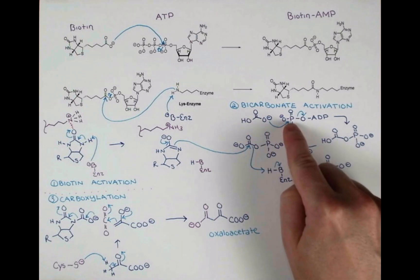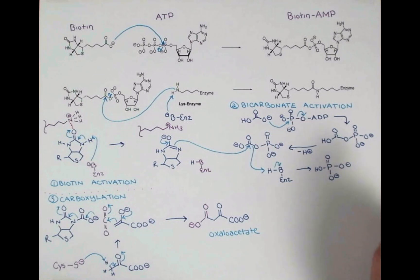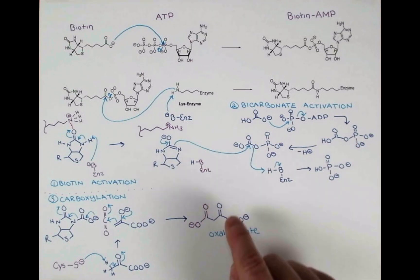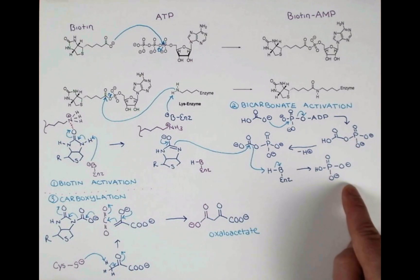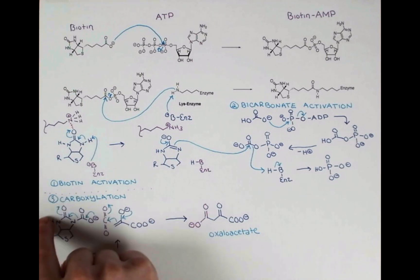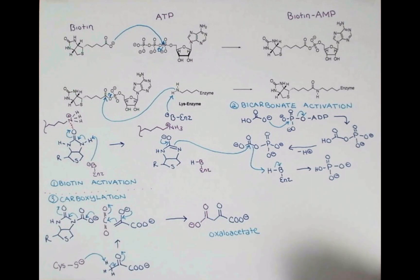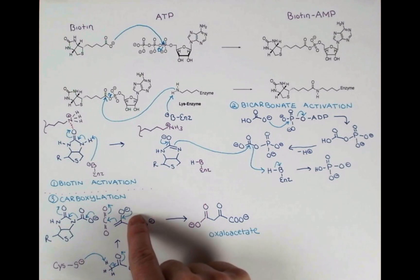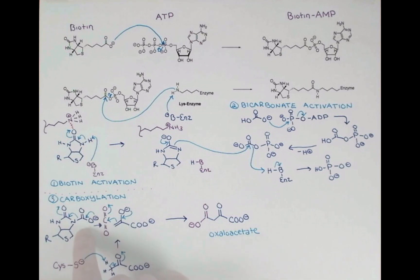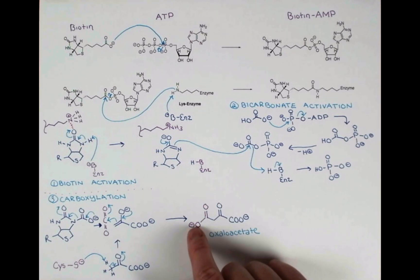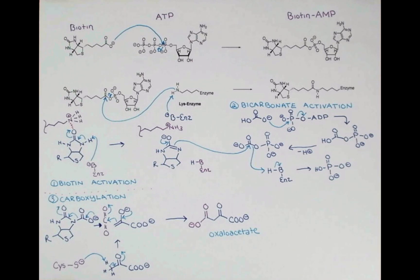Bicarbonate is the source of CO2 in these reactions. It first becomes activated by reacting with ATP, linking up with the phosphate, and then biotin can attack it, producing a molecule of inorganic phosphate and our carboxylated biotin. Enolization of a substrate allows for that substrate to become a nucleophile, trapping the CO2 produced from biotin and introducing a CO2 group onto the substrate.